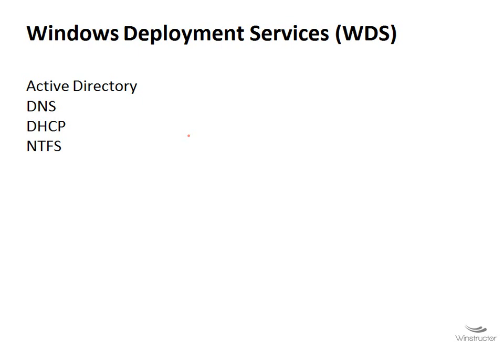Before we switch over to a Windows 2008 server, there are some additional requirements you'll need to meet. Firstly, we need to have Active Directory running, which means a domain controller in your network. Secondly, you'll also need a DNS server - if you've already got a domain controller, you'll already have DNS. We'll also need a DHCP server, which can be on a separate server. Finally, we need somewhere to store our images on an NTFS partition.